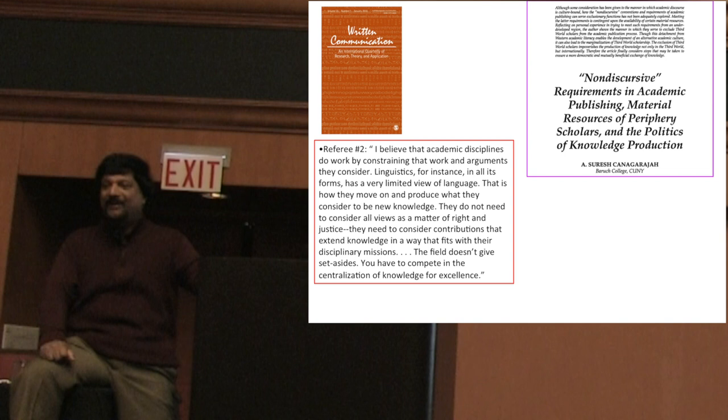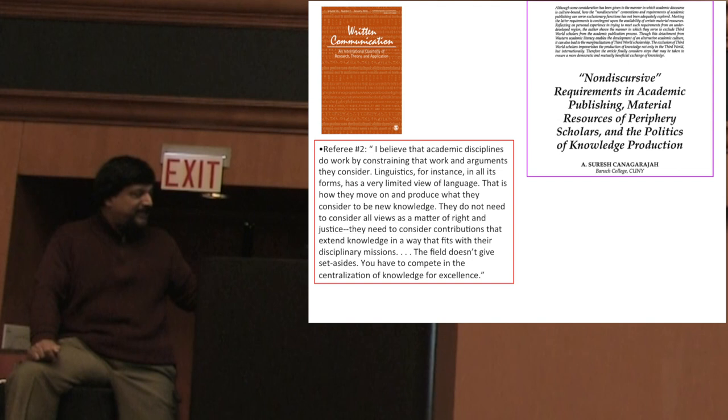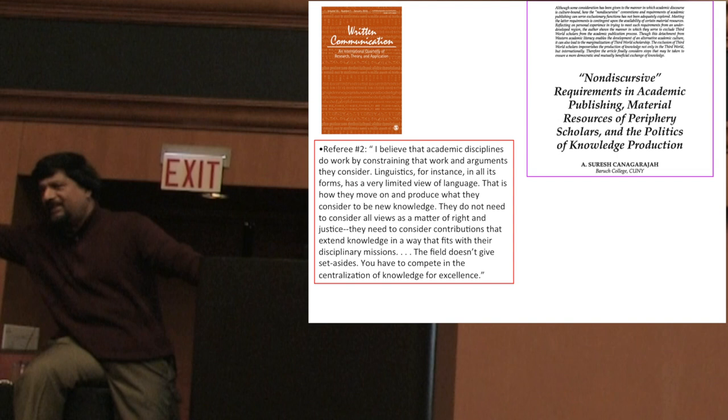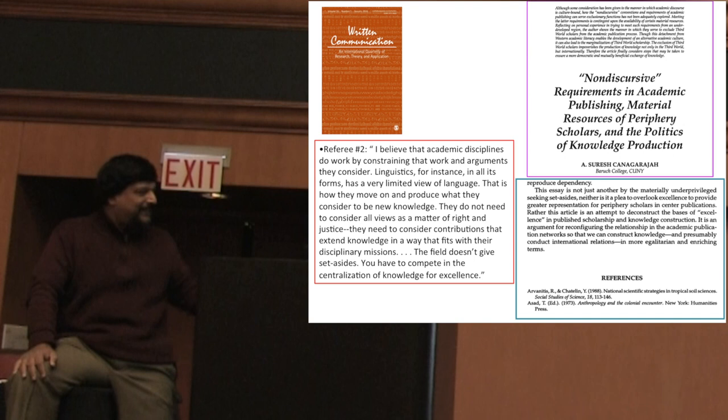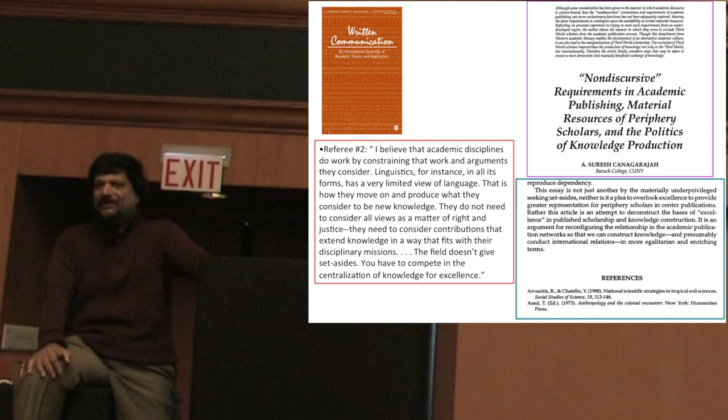By the way, he actually adopts a nice metaphor from American affirmative action, things, movement, that I didn't appreciate at that point, now I understand better. This person is saying, we're not going to say, two articles for those from Sri Lanka there, two articles for those Nigerians there, I guess, all the rest is for us. Right? No set-asides here. That is it. So, I kind of approached this very gingerly, and after a lot of revisions, concluded by saying, this essay is not just another lament by the materially under-privileged, seeking set-asides, neither is it a plea to the well-endowed, to provide greater representation for periphery scholars in center publications, rather this article is an attempt to deconstruct the basis of excellence in publishing scholarship and knowledge construction.